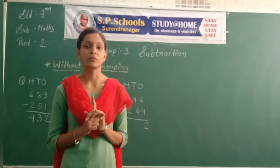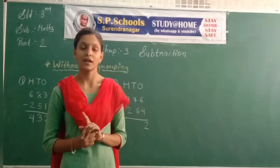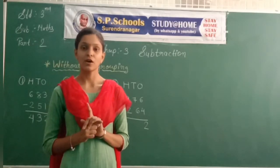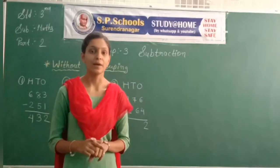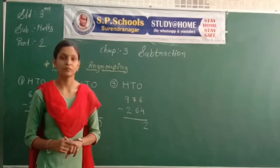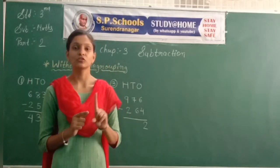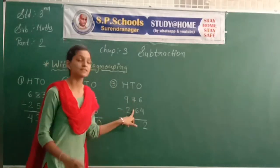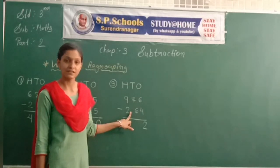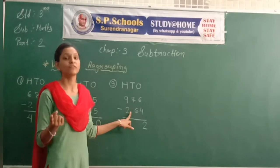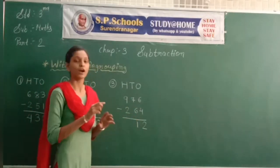Just like in addition — 3, 4, 5 — in subtraction, 7 minus 6: 7's before number is 6. So 7 minus 6 answer is 1. Similarly, 7 minus 1 gives answer 6 — meaning 7 minus 1, the before number of 7 is 6. So 7 minus 6, the answer is 1.